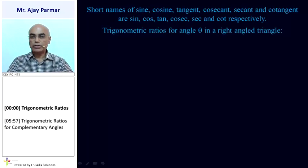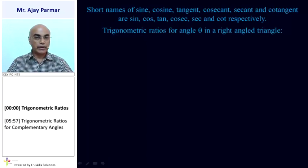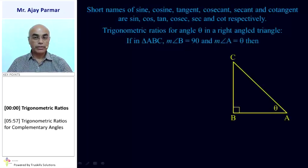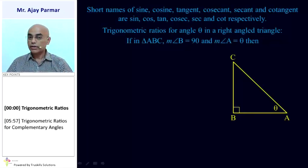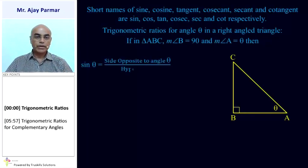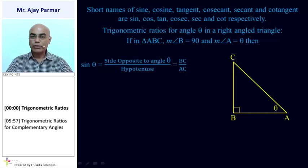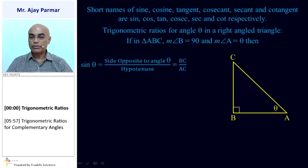The trigonometric ratios for an angle theta in a right-angled triangle: we know that if it is a right-angled triangle, then the remaining two angles have to be acute angles. That means the condition for theta here is that it should be an acute angle. Sine theta is equal to the side opposite to angle theta upon hypotenuse — that is BC upon AC.